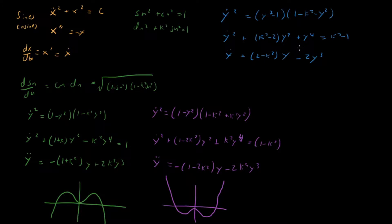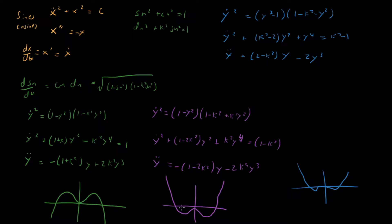Looking at the dn potential: we have a positive quartic term, and the y² term is always negative, so this is restricted to the double-well potential case. But what's the difference between cn and dn? For cn we also had a double-well potential. The key difference is that cn goes between −1 and +1, so the oscillations go from the right side over the ridge to the left side and back — crossing the barrier.